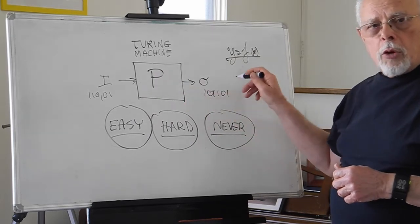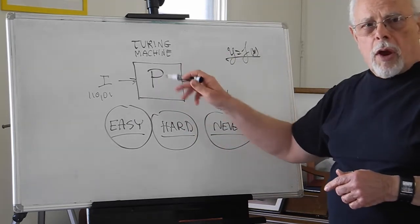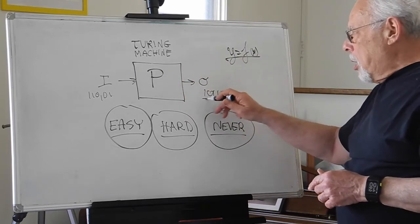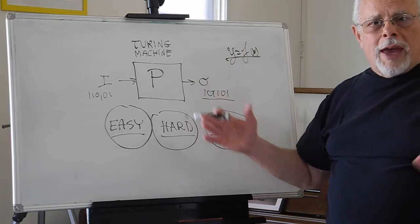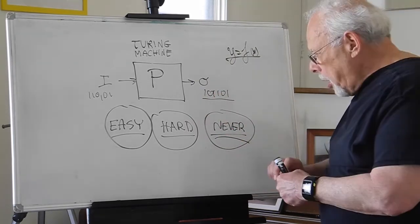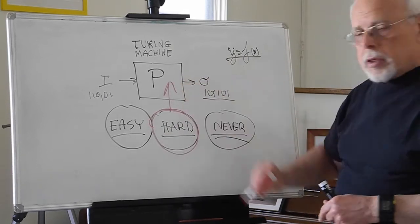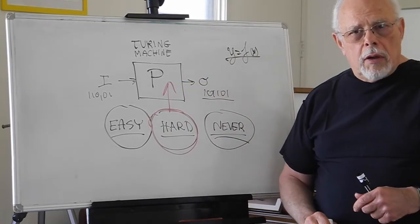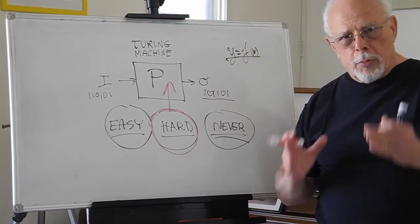Hard are those that keep cranking and cranking before the output comes out. And never are those that crank and crank and crank and never develop an answer. The category of hard Turing machines is the basis of modern cryptography.